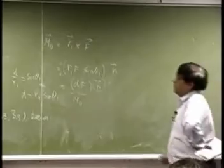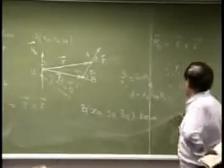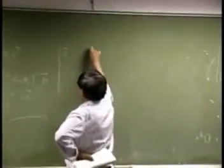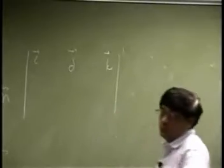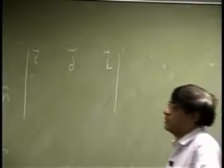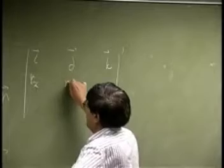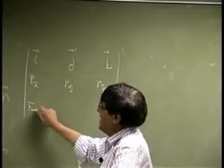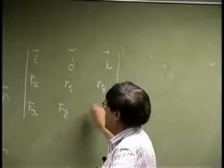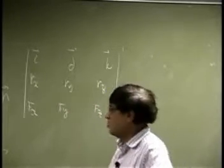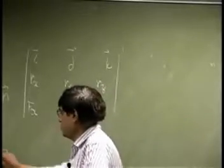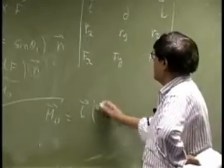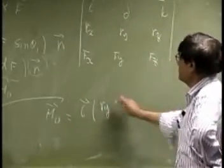I could write this here as a determinant: it could be i, j, and k for your first set of vectors, then you're going to have components rx, ry, rz, then you're going to have components fx, fy, and fz.